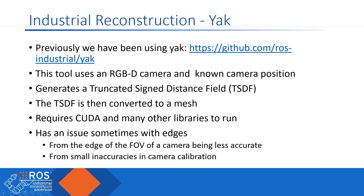In the past, we've been using the GitHub repository called Yak. It uses an RGBD camera — a regular color camera with depth — and a known camera position attached on a robot after calibration, to generate what's called a Truncated Sign Distance Field, or TSDF. This TSDF can then be converted into a mesh. It's a handy tool to get a higher resolution mesh than you could with just a single snapshot, and it uses fairly cheap equipment.